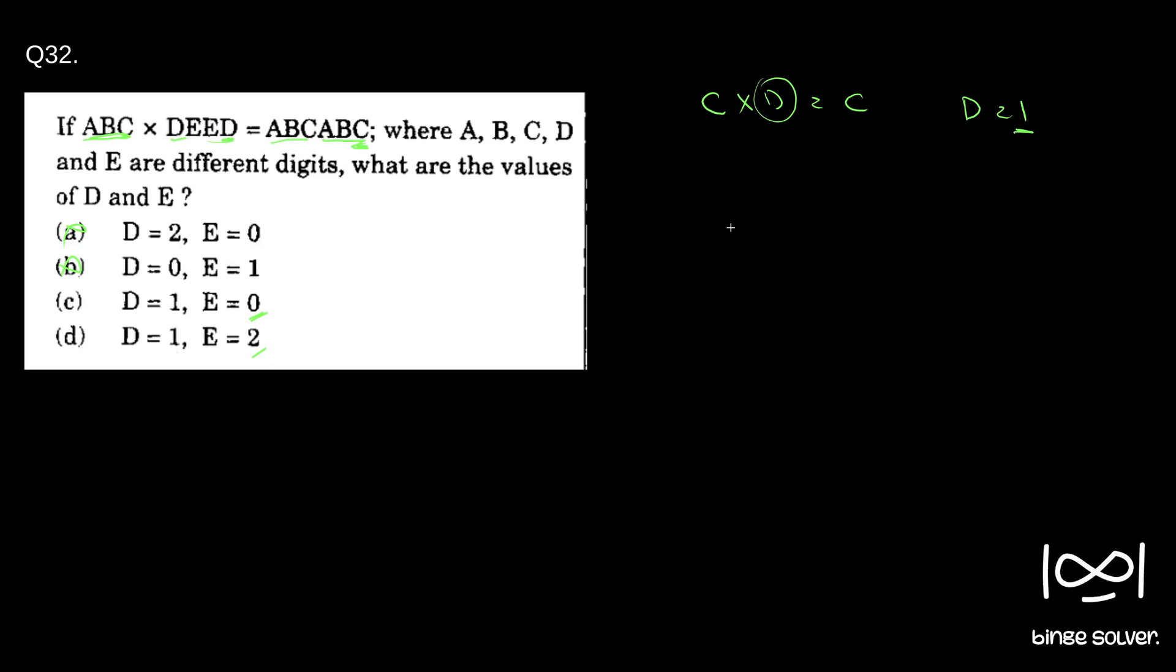So abc × (putting d = 1 and e = 0) - this becomes 1001, right? d = 1 and e = 0.